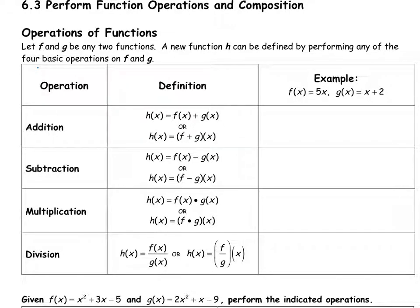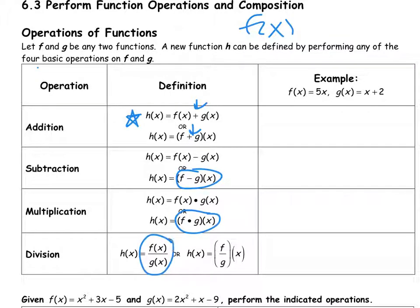Now we're going to learn how to do operations on and composition of functions. Doing function operations is really the same thing we've talked about before — we're just learning the notation. Back in earlier math classes, you learned about function notation like f of x. Now we're going to combine different functions. We might write f of x plus g of x with the plus in between, or with f and g in the first parentheses. We do the same thing with all operations — these are different ways you might see it, but they all mean the same thing.